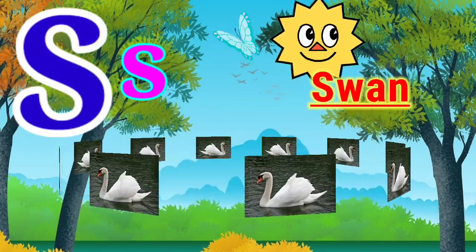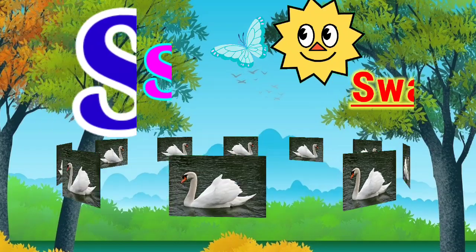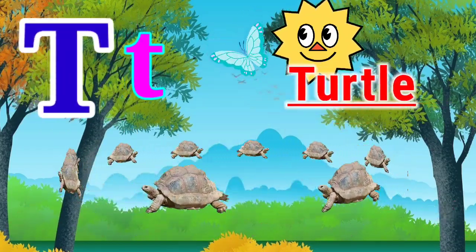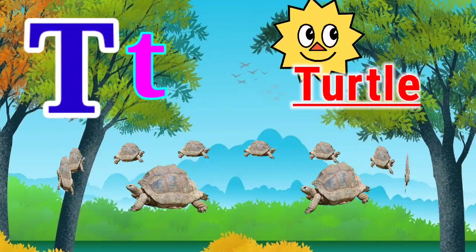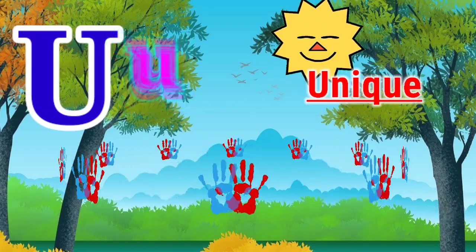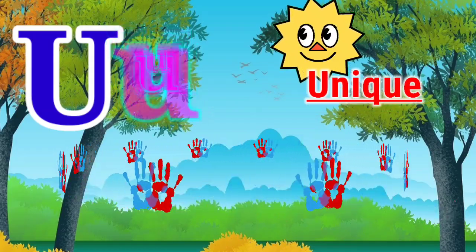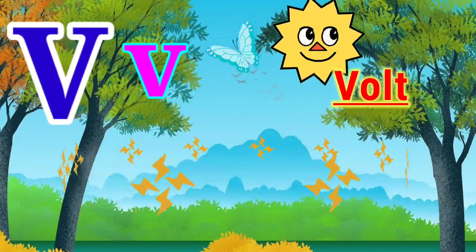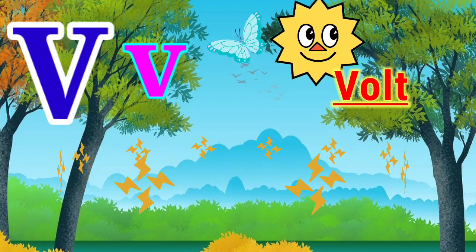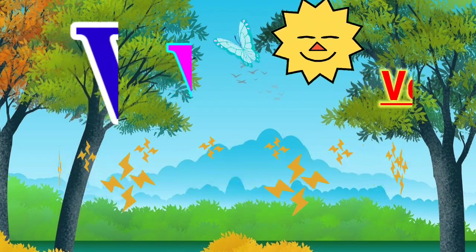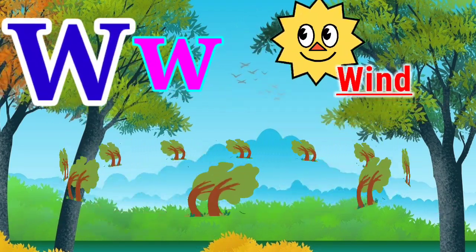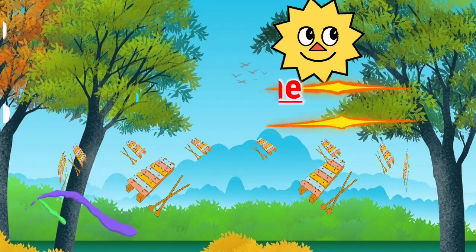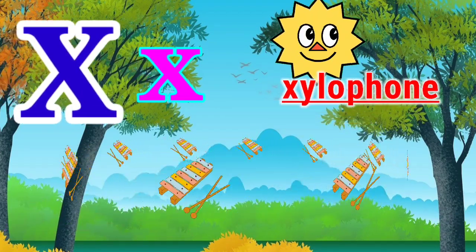S for sun. T for turtle. T for orange. U for unique. V for bald. W for wind. X for xylophone.